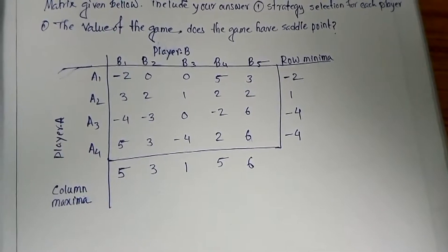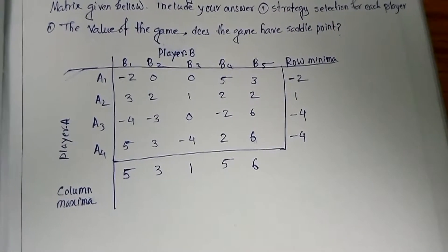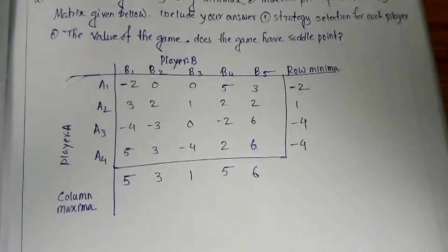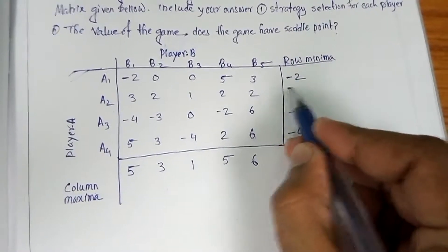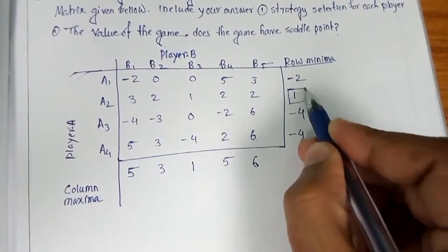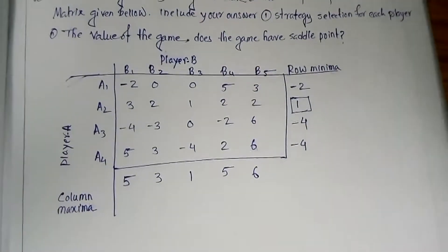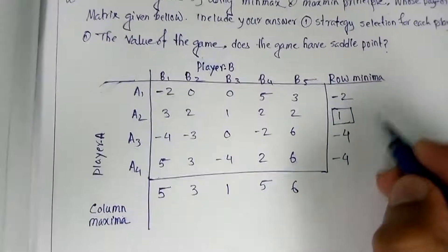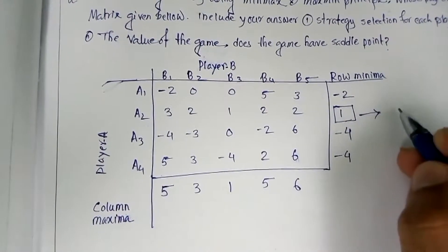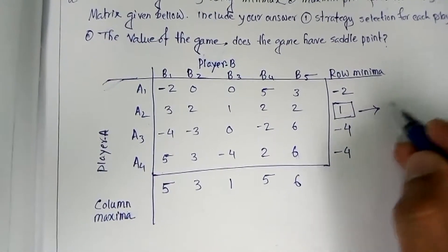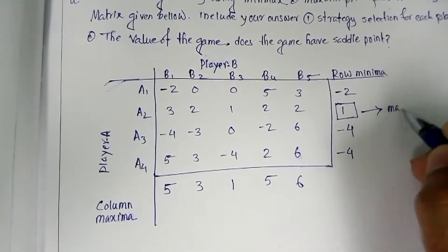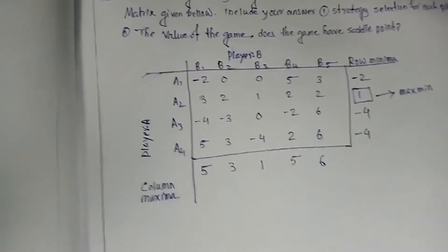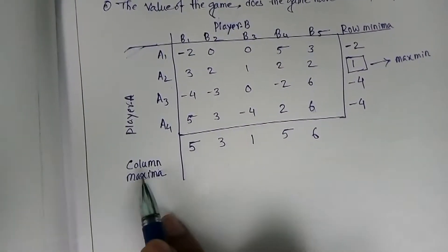For Step 2, find the maximum value of the row minima. The maximum value among the row minima is 1. Mark this value with a square symbol. This is known as the maximin — the maximum of the minima.